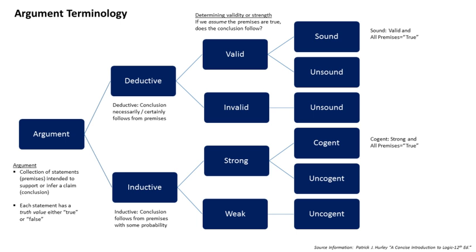Informal arguments, as studied in informal logic, are presented in ordinary language and are intended for everyday discourse. Conversely, formal arguments are studied in formal logic — historically called symbolic logic, more commonly referred to as mathematical logic today — and are expressed in a formal language. Informal logic may be said to emphasize the study of argumentation, whereas formal logic emphasizes implication and inference.